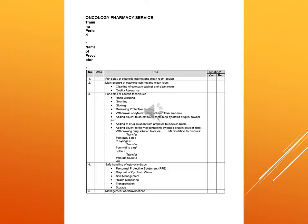Oncology pharmacy services have a training period of 2 weeks in which the name of the preceptor must be mentioned. There are different tasks for RPRP which include principles of cytotoxic cabinet and clean room design, maintenance of cytotoxic cabinet and clean room, including cleaning and quality assurance.